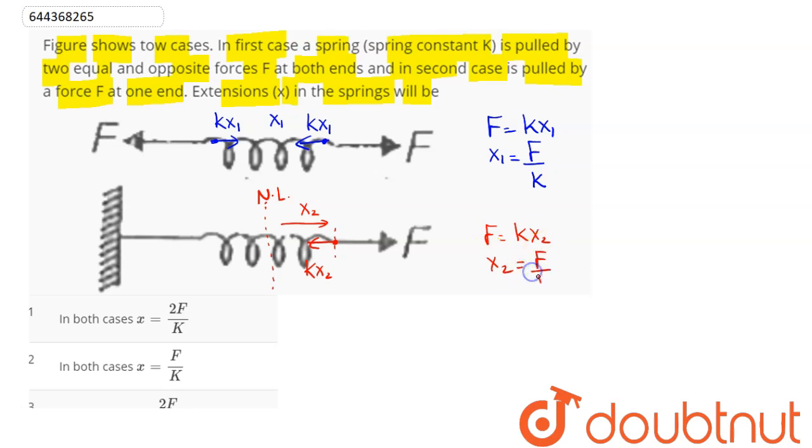But here, the distance of natural length from the mean position or equilibrium position is the amplitude. So it will further go towards the stretching x2. It further elongates by x2 distance, as this is the mean position and this is maximum stretching.